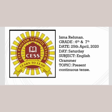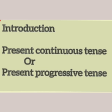Today our topic is Present Continuous Tense. Present Continuous Tense is also known as Present Progressive Tense. It is a tense which is used to show that an ongoing action is happening now, either at the moment of speech or now in a larger sense.